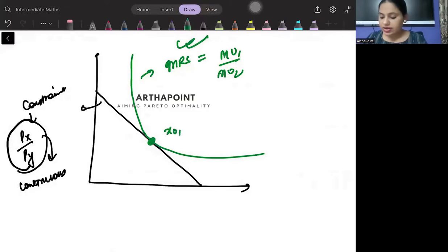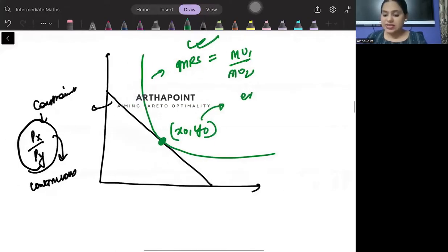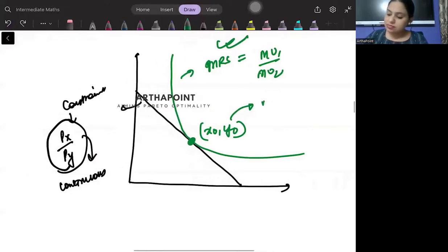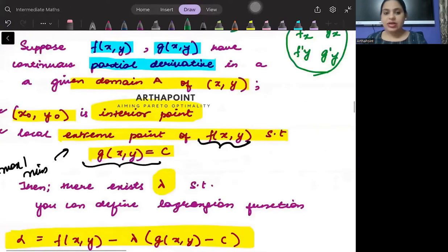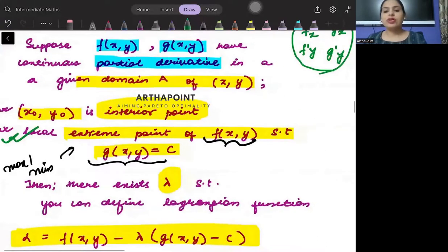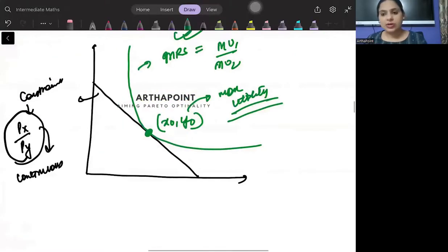But ye ek interior point hai, (x0, y0). Aur ye jo point hai na, this is also your maximum, satisfying the maximum utility. It maximizes your utility, right? It is also a local extreme point. It is maximizing your utility. Clear ho?